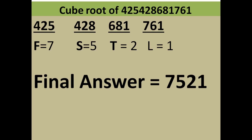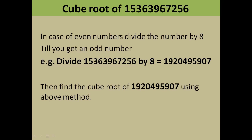Now let's find the cube root of an even number — there's a trick involved. Take the even number 15363967256. For even numbers, divide by 8 repeatedly until you get an odd number. Dividing 15363967256 by 8 gives 1920495907. We will find the cube root of 1920495907 first, then use it to get the answer for the original number.